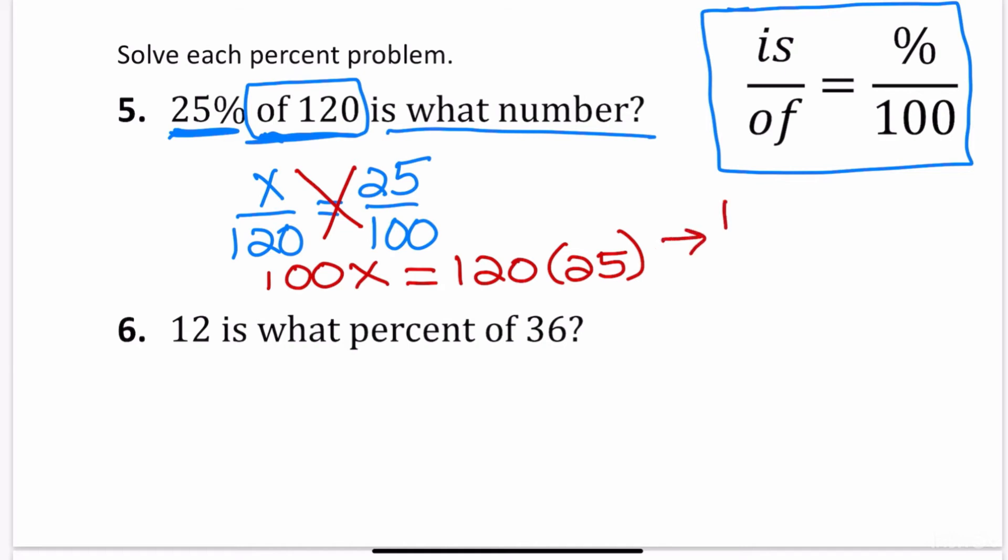So basically, I get 100x is equal to 3,000. Divide both sides by 100 because you're trying to solve for x, and you always divide by the number next to the variable. I can cross out these two sets of zero. So x is equal to 30. So that means that 25% of 120 is going to equal 30.